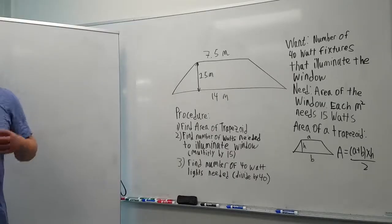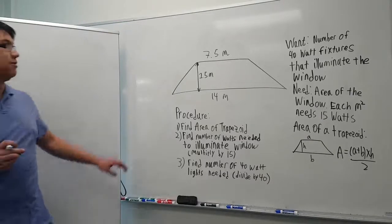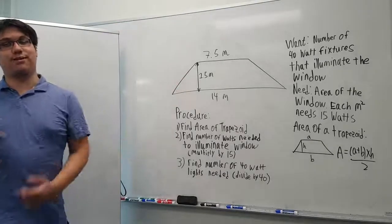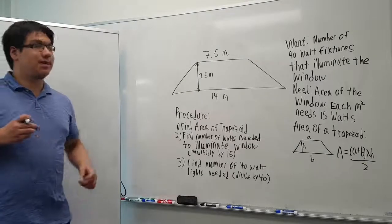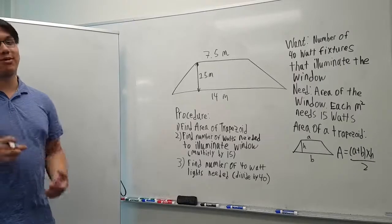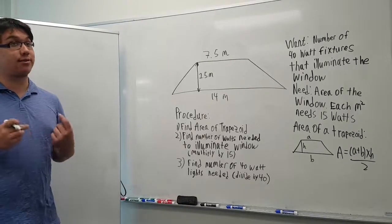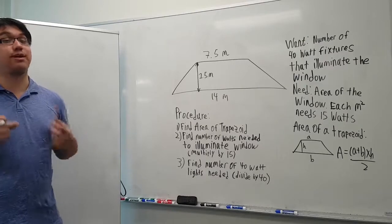This is a complicated multi-step problem. There's a trapezoidal window where each square meter requires 15 watts to illuminate it. You want to know how many 40-watt light bulbs we're going to need to fully illuminate the window.